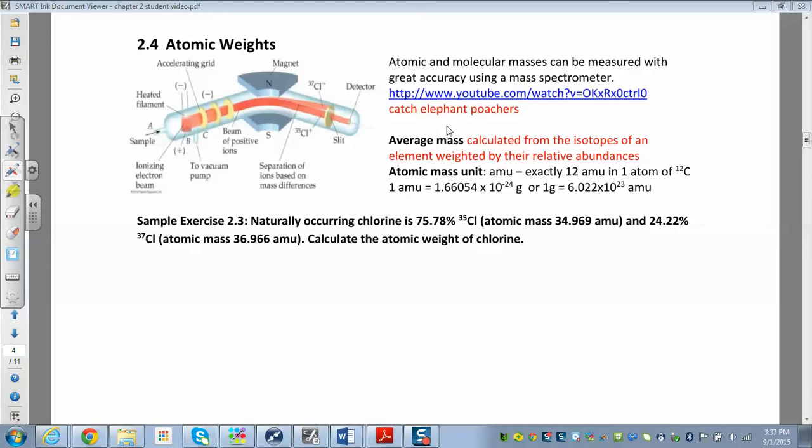And then what happens is how do they catch poachers once they do that? So you confiscate some of the ivory, and then you can take a little bit of it, and you can test it. You run it through a mass spectrometer,